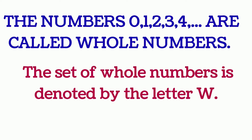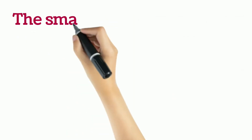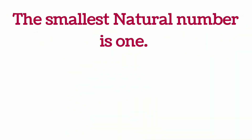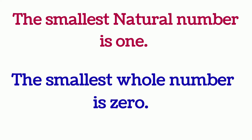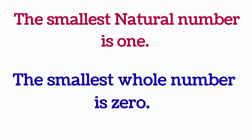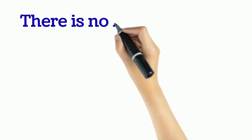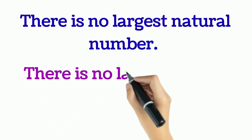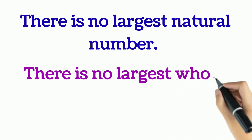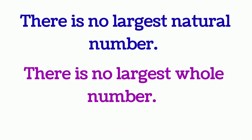Now, which is the smallest natural number? The first number you started counting from was one, so the smallest natural number is one. And the smallest whole number is zero. Can you tell me if there is any largest natural number or largest whole number? There is no largest natural number or largest whole number — the numbers go on and on. So we do not have a largest, but we do have a smallest natural number and a smallest whole number.